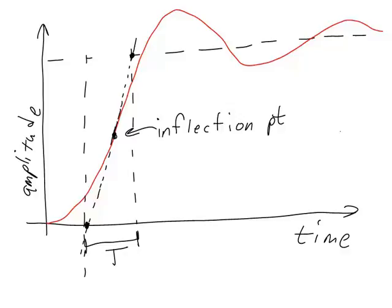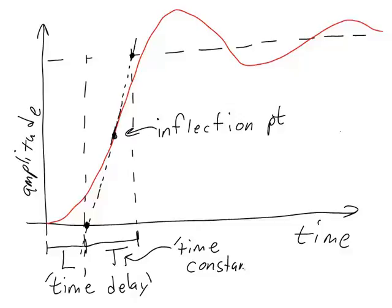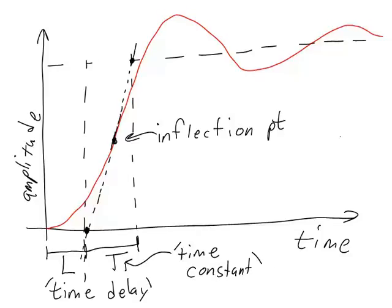Besides a time constant, a second order system also has a property called the time delay. The time delay is the time between the application of the step input and the point at which the linear fit for the inflection point hits the starting amplitude. This time is called L and represents the time delay, while capital T represents the time constant of the system.